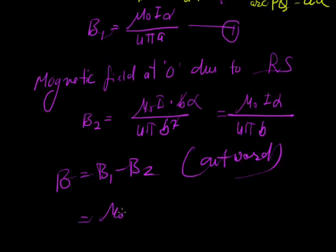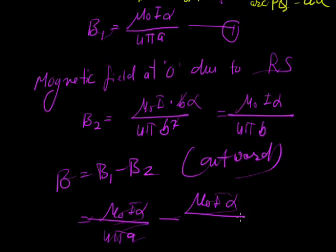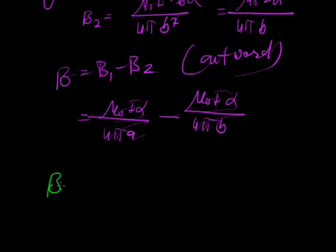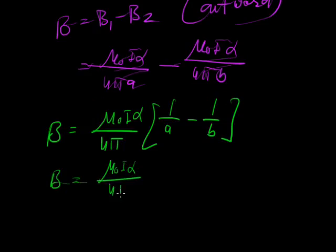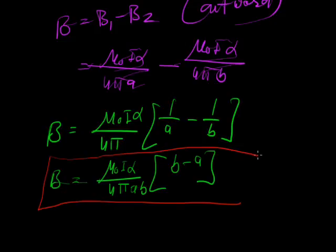This is mu_0 I alpha upon 4 pi A minus mu_0 I alpha upon 4 pi B. So resultant magnetic field B equals mu_0 I alpha over 4 pi, times 1 upon A minus 1 upon B. Or we can write B equals mu_0 I alpha upon 4 pi AB times B minus A. This is the magnetic field at the center of the given figure.